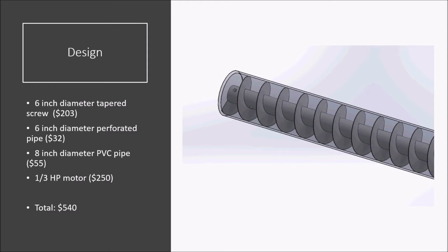The major components of the design include a 6 inch diameter tapered screw, a 6 inch diameter perforated pipe, and an 8 inch diameter PVC pipe for liquid drainage. A small one-third horsepower electric motor provides the rotation for the screw. The approximate total cost of the major components is $540.